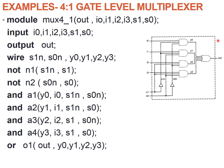The last OR gate has its output as OUT and inputs Y0, Y1, Y2, Y3, which we previously calculated. Totally we have 4 AND gates plus 2 NOT gates plus 1 OR gate, that is 7 gates. All 7 gates have been instantiated with output and input variables listed. The gate level description of the multiplexer is done, and we end the module using the keyword endmodule.